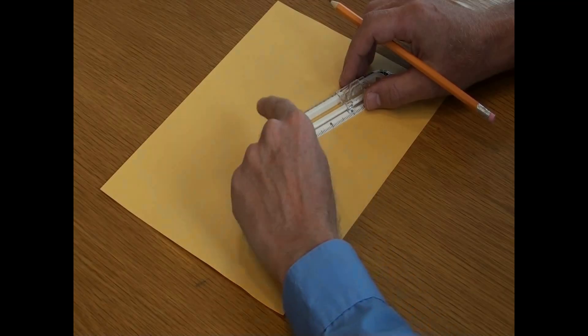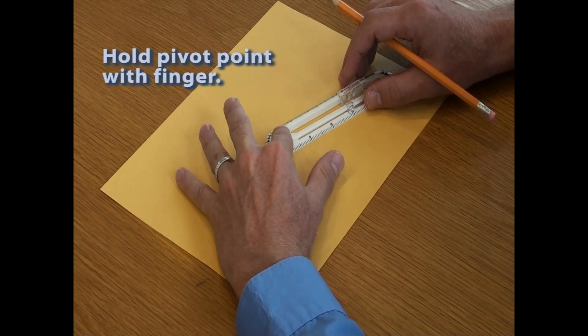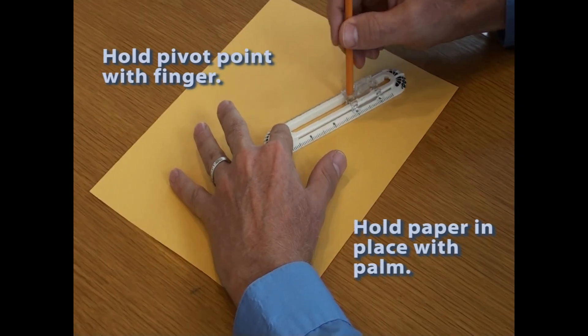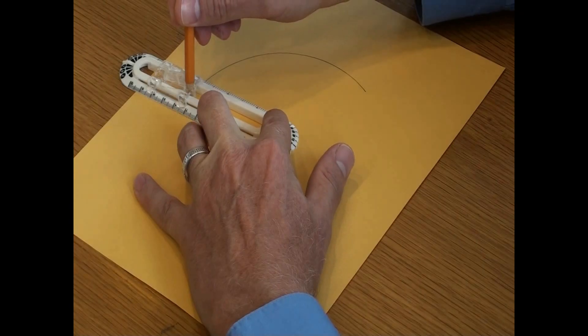I have found that it is easier to create an arc by using one finger to hold the pivot point and using my palm to hold the paper. Now I use my other hand to scribe an arc or a circle. With this technique, I can only draw a semicircle.